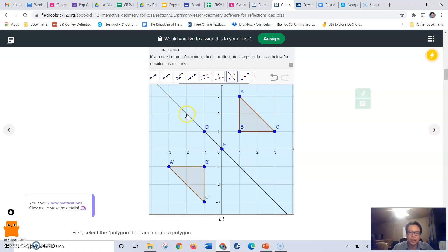Click anywhere on the line other than the two points there and then magically triangle A prime B prime C prime appears.